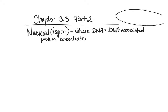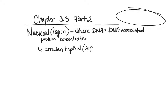In a prokaryotic cell, the nucleoid is the region where DNA and DNA-associated proteins concentrate. The prokaryotic chromosome is usually circular and haploid — meaning unpaired, a single chromosome wound around itself.